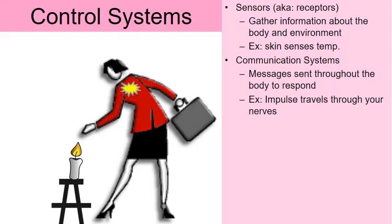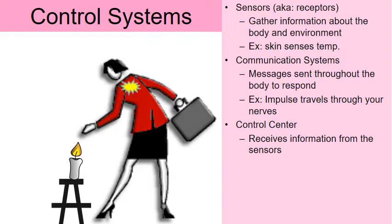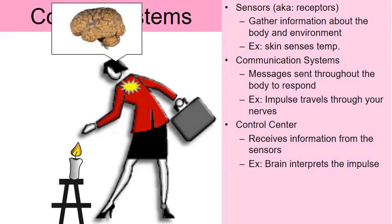Messages are going to be sent through the body in order to respond. Signals — in this case an electrical signal called an impulse — will travel up the woman's arm and into her brain. Speaking of the brain, we now have the control center. What the control center does is receive information from the sensors. In this case, it's the brain interpreting this impulse as a temperature impulse.